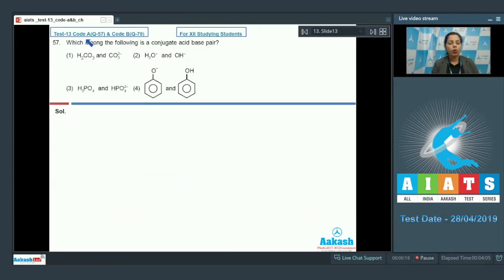After this, now here is question number 57. Which among the following is a conjugate acid-base pair? Suppose, I have a certain acid HA. Then, definitely after loss of proton, we will get its conjugate base. Here, it has lost its H⁺ ion.